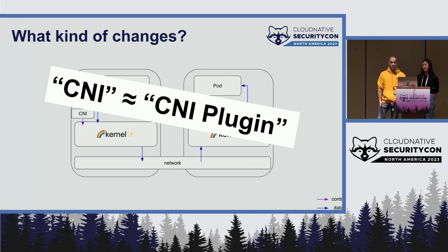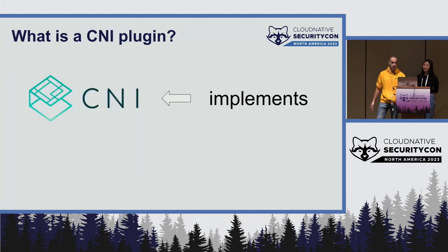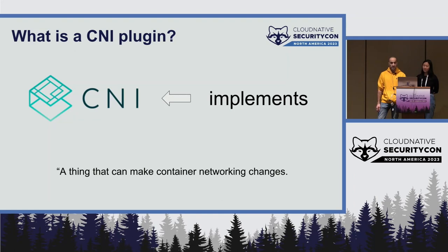CNI plugins stand on the shoulders of giants and just configure your kernel to do the networking for you. CNI is just an interface — you need a plugin to actually do the change. A plugin is something that implements the interface and answers the request when the call comes in to make changes to the network configuration.